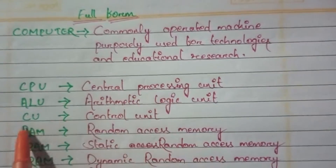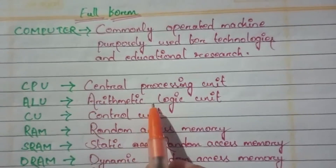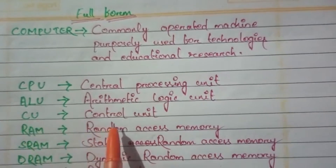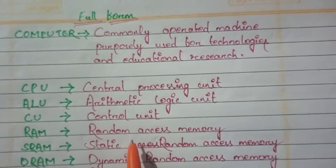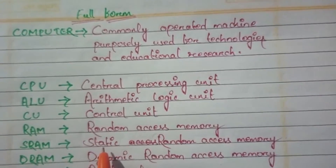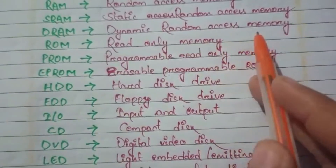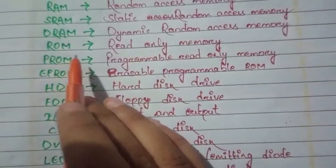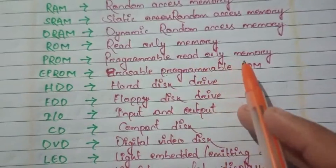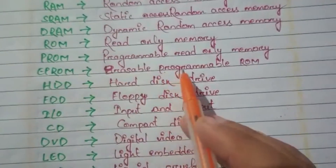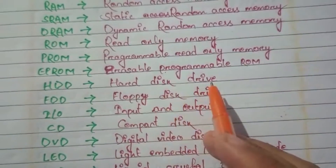ALU - Arithmetic Logic Unit. CU - Control Unit. RAM - Random Access Memory. SRAM - Static Random Access Memory. DRAM - Dynamic Random Access Memory. ROM - Read-Only Memory. PROM - Programmable Read-Only Memory. EPROM - Erasable Programmable ROM. HDD - Hard Disk Drive.